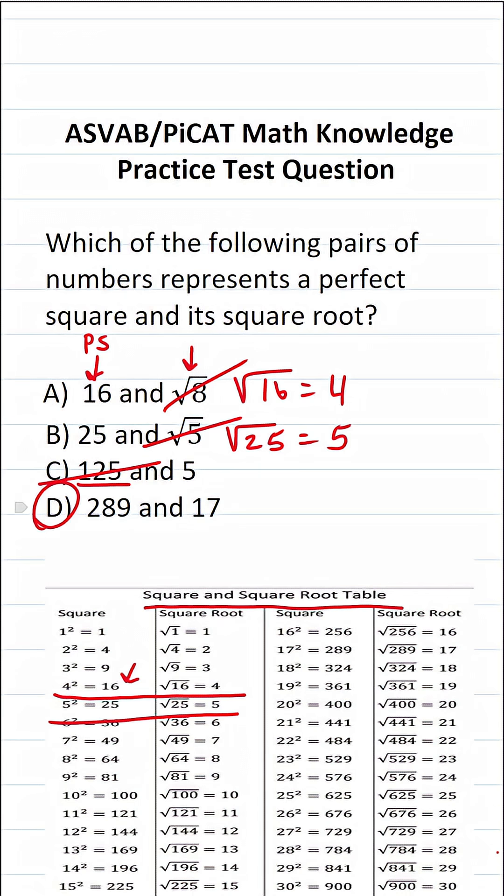By process of elimination you should be able to say that D is correct. If you take a look over here you can see that 289 is 17 squared, so 289 is a perfect square and the square root of 289 is going to be 17.